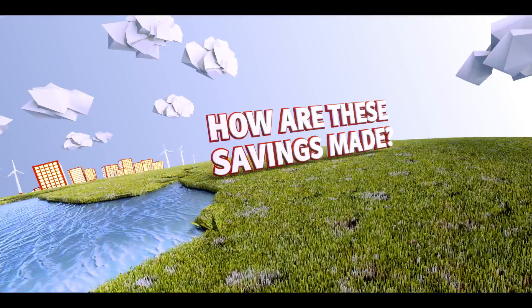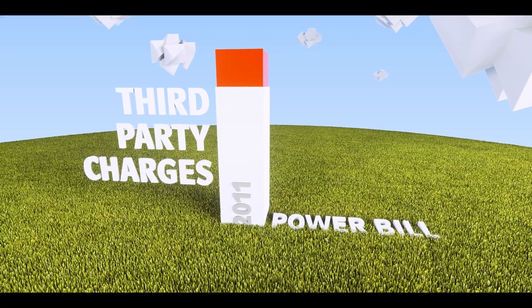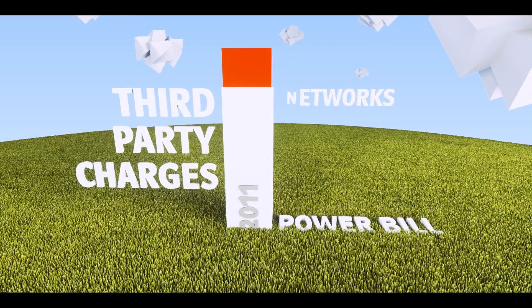So how are these savings made? A significant portion of any power bill covers what's called third-party charges – the cost of transporting energy over the networks, policy and taxes.